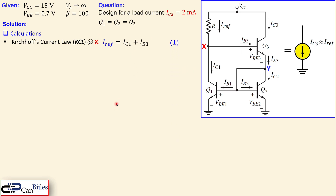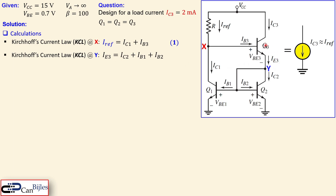Now applying KCL at node Y: the emitter current IE3 of transistor Q3 splits into IC2 and another branch, which further splits into IB1 and IB2. We call this equation number two.